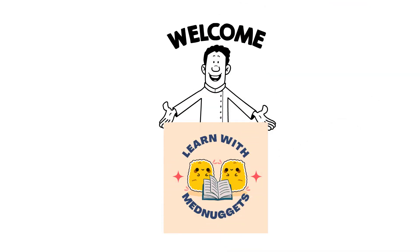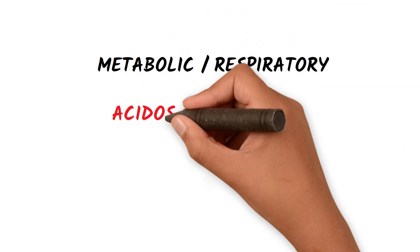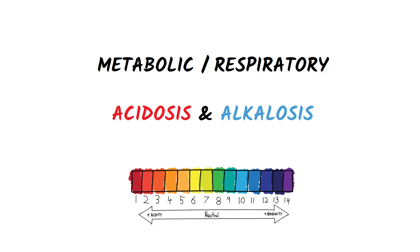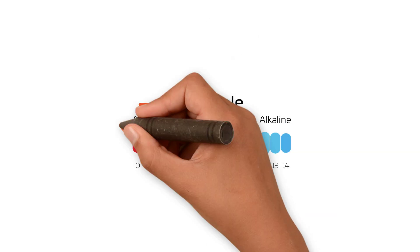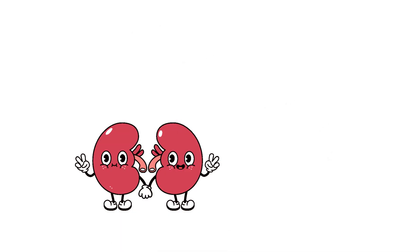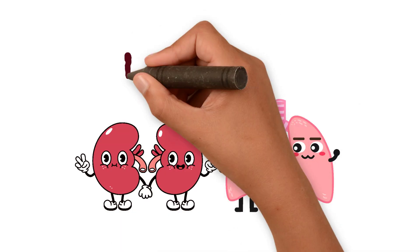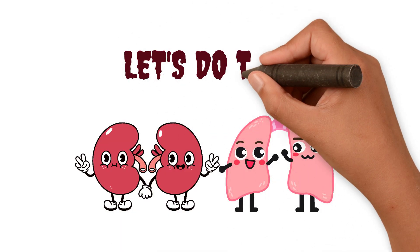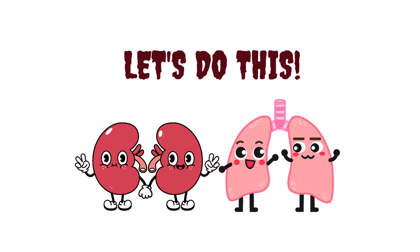Welcome back to Learn with MedNuggets. In this video, we will be talking about metabolic and respiratory acidosis and alkalosis. Even a slight variance outside of normal pH can be life-threatening, so our kidneys and lungs work together to correct slight pH imbalances. The kidneys compensate for shortcomings of the lungs, and the lungs compensate for shortcomings of the kidneys.